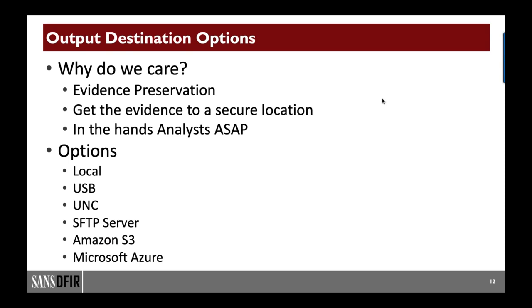Regarding destination options: we care about where we're writing because we want to preserve evidence and get it to a secure location as soon as possible, and into the hands of analysts quickly. Writing it to the local hard drive probably isn't the best bet, but there are times it may be your only option. CAPE can write to the local hard drive, a USB thumb drive or removable drive, a UNC path, an SFTP server — and CAPE itself can be that SFTP server — as well as S3 and Azure.